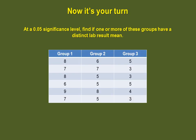Now it's your turn. Pause the video and find if, at a 0.05 significance level, one or more of these groups have a distinct lab result mean.